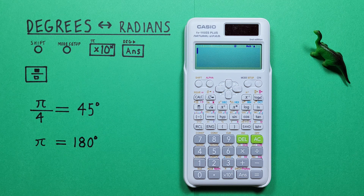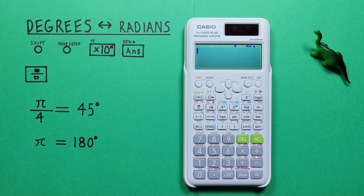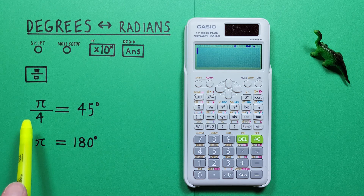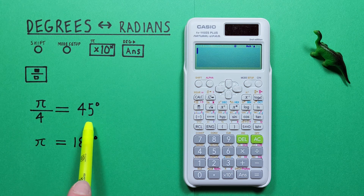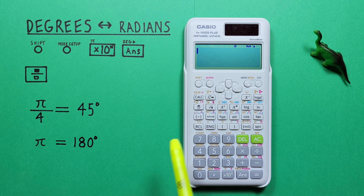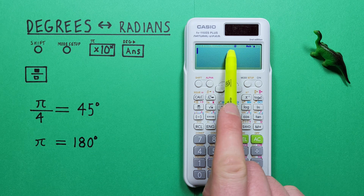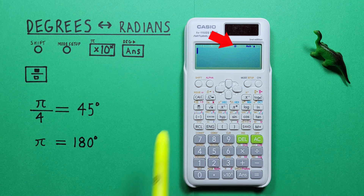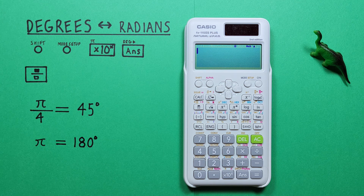If you're given a value like pi over four in radians and want to convert that to degrees, the first thing we have to do is set our calculator to the mode we want our results in. So if we're going from radians to degrees, we want it in degrees mode. Right now you can see an R at the top of the screen, letting us know the calculator is set to radians mode. So we need to change this to degrees.